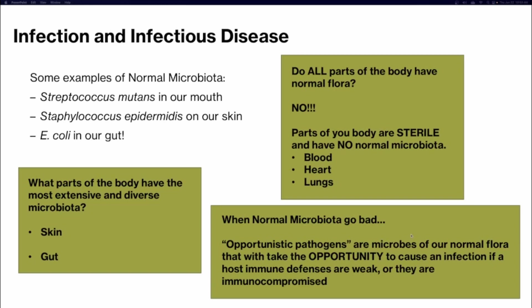What happens when normal microbiota go bad? Many of our normal microbiota are considered opportunistic pathogens — microbes that would normally not cause any issues in someone healthy, but if someone has a weakened immune defense or is immunocompromised, that pathogen can take the opportunity to lead to an infection. Staphylococcus epidermidis, for example, is an opportunistic pathogen. We all have it on our skin, but it can potentially overproliferate and overgrow, leading to infection in someone whose immune system can't keep it at normal growth levels.